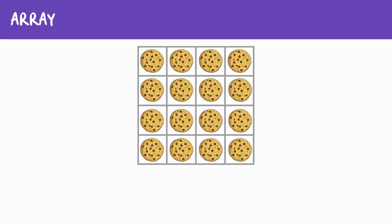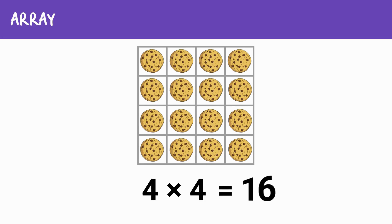Now let's move on to arrays. Arrays are like organized grids that make multiplication easier to visualize and see. Let's say you have four rows of cookies and each row has four cookies — that's an array. We can make four rows of cookies by four columns of cookies. Once you have an array, you can count the total cookies, skip count by four, or use multiplication if you have memorized your facts. Using the array, we can determine that four times four equals 16.